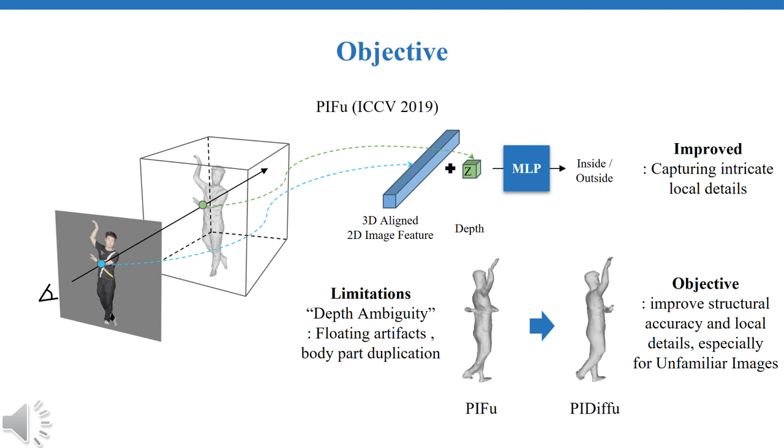However, PIFu's dependence on depth value alone can lead to issues like floating artifacts and unnaturally elevated body parts, especially when depth ambiguity exists in the image. Our goal is to address these challenges through the diffusion strategy.